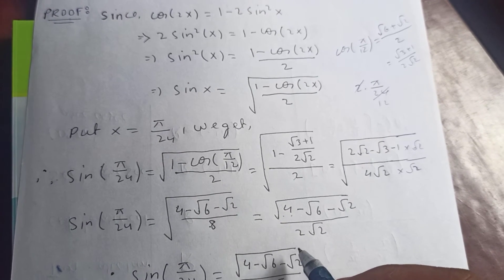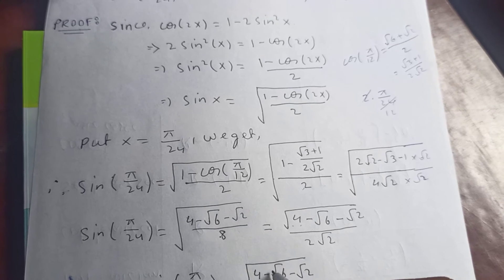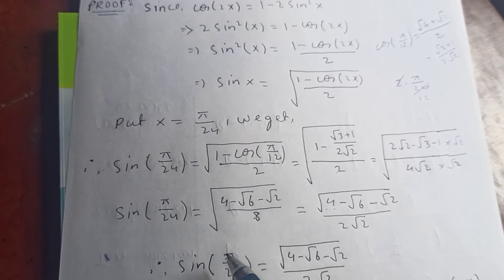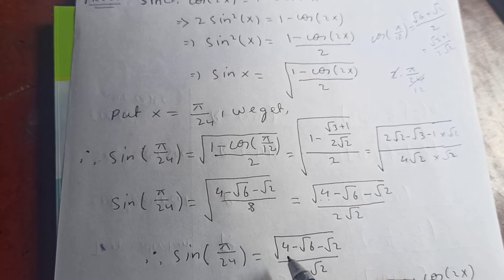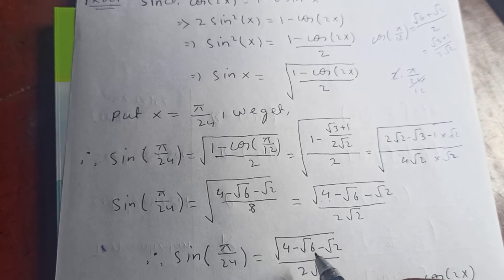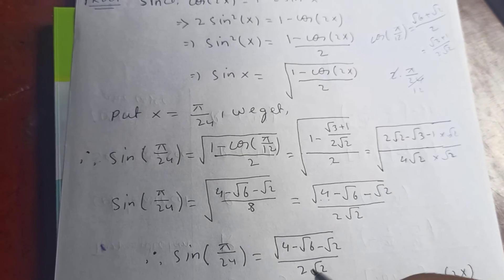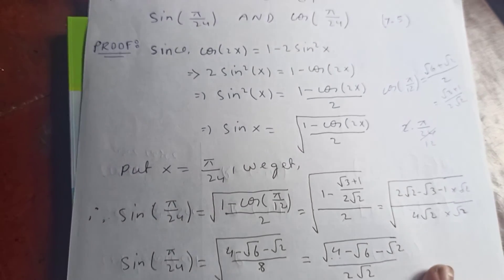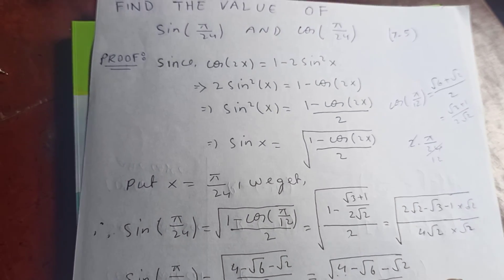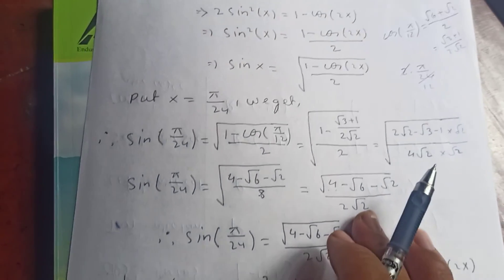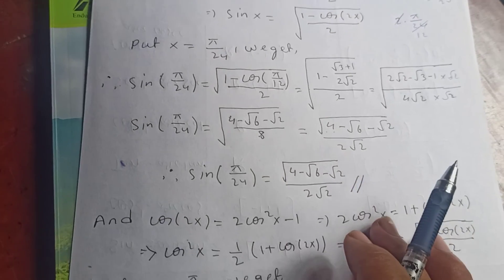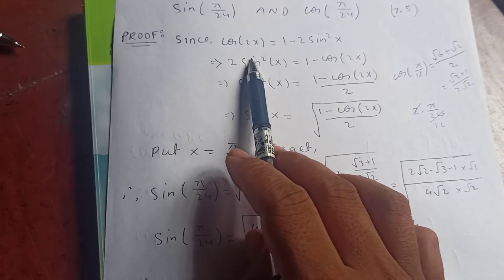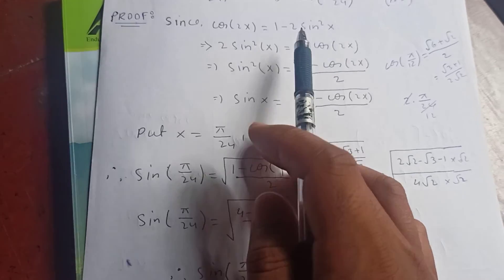Therefore, sine of π over 24 equals square root of (4 minus √6 minus √2) over (2√2). So this is the value for sine of π over 24. Now let's find cos of π over 24 using the double angle formula for cosine.